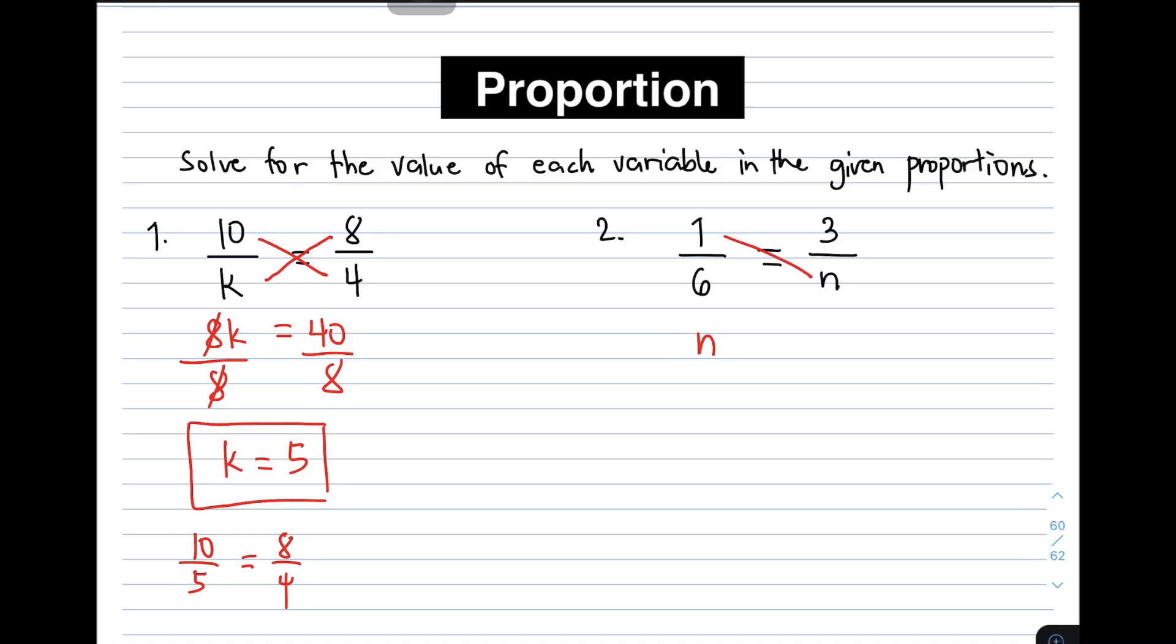Then equal to 6 times 3, that will give you 18. Therefore, the value of the missing variable is 18.